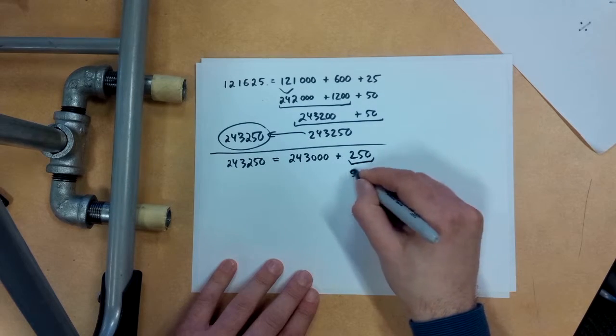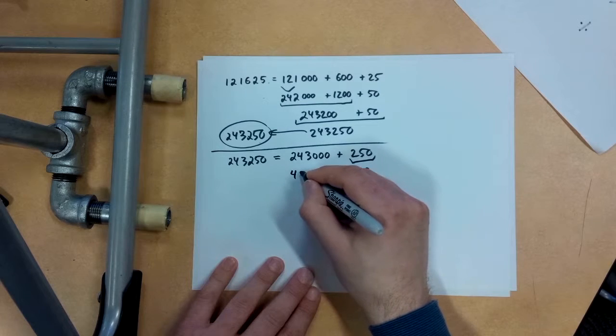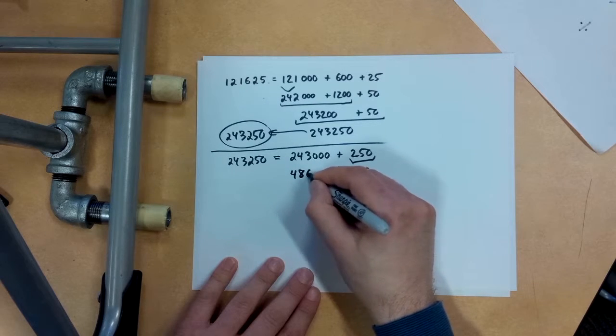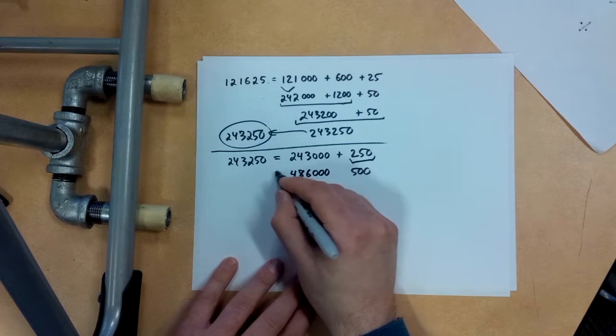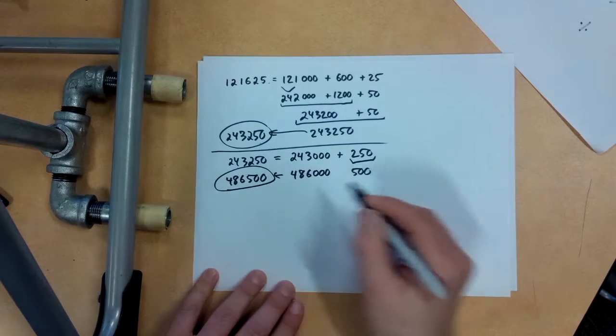And this here, I just have to double the numbers here, 486,000. So 486,500 is that doubled product there.